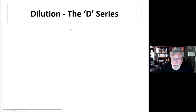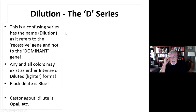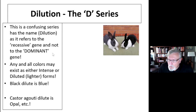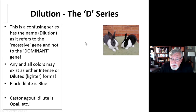The D series — dilution. We've gone through A, B, and C. The dilution series has two things that can happen: it can either be intense or dilute. It's a confusing name, because when we call it dilution, it refers to the recessive gene and not the dominant. Capital D is intense; little d is recessive and dilute. Here you see two Dutch rabbits — the one on the right is black, the one on the left is blue. At the B series, they are both dominant for black. So blue is actually a black rabbit that is diluted by two little d genes.